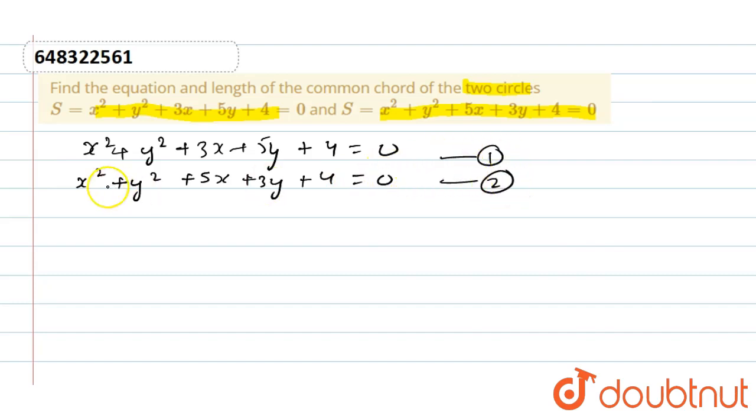Subtract the two equations to find the common chord equation. The terms will cancel, giving minus 2x plus 2y equals 0.